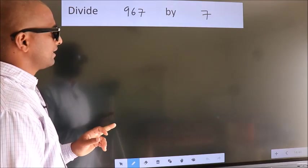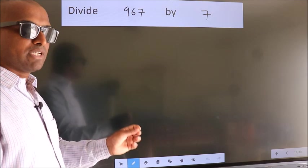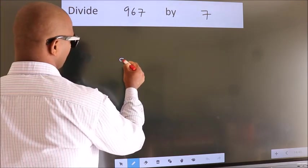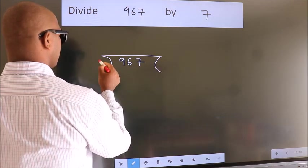Divide 967 by 7. To do this division, we should frame it in this way: 967 here, 7 here.